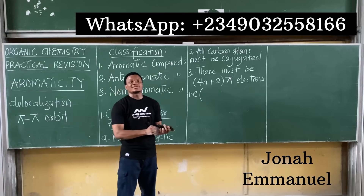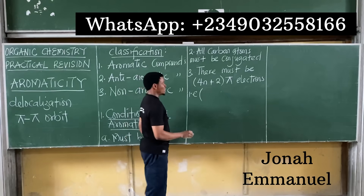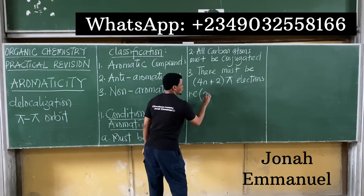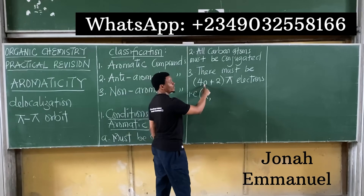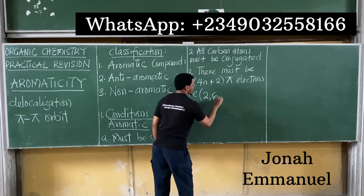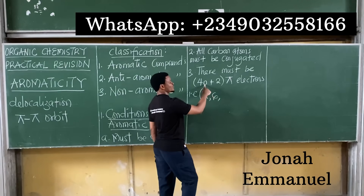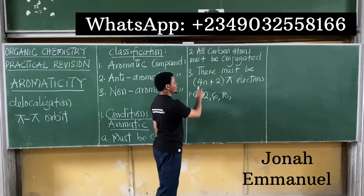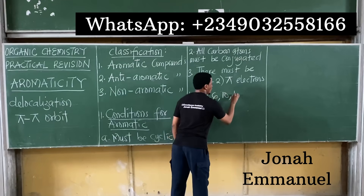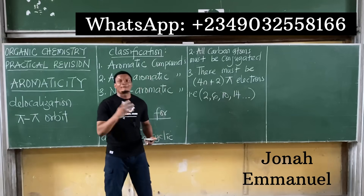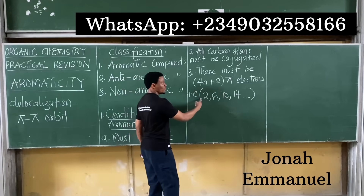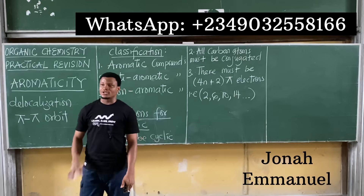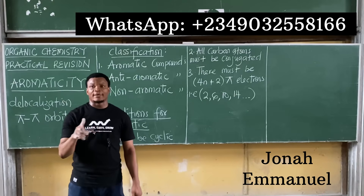Let n = 0: 4(0) + 2 = 2. Let n = 1: 4(1) + 2 = 6. Let n = 2: 4(2) + 2 = 10. Let n = 3: 4(3) + 2 = 14. So if you count the pi electrons and it's either 2, 6, 10, or 14, it's an aromatic compound. The formula is 4n + 2 pi electrons.